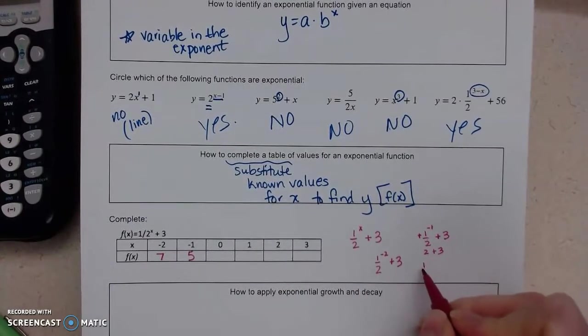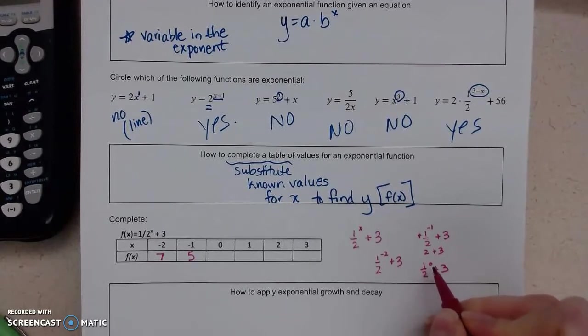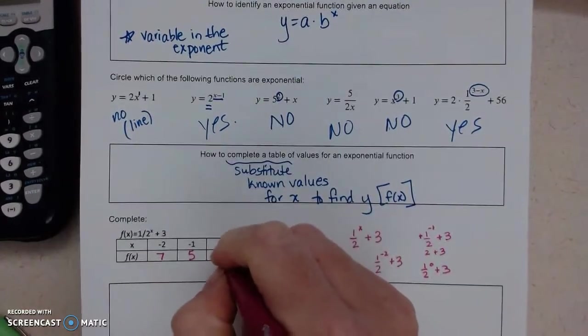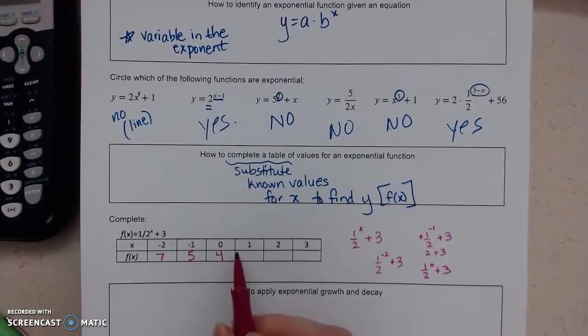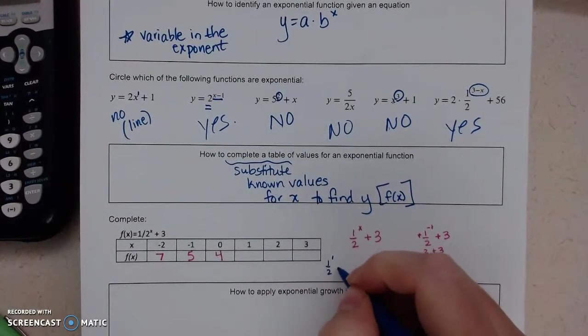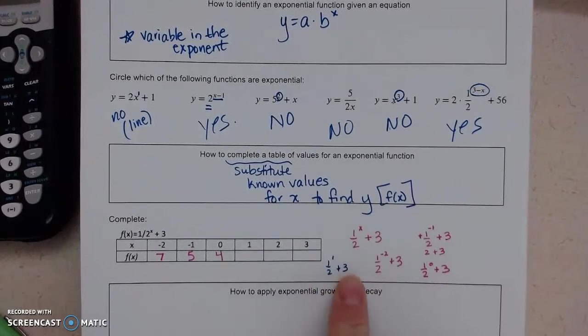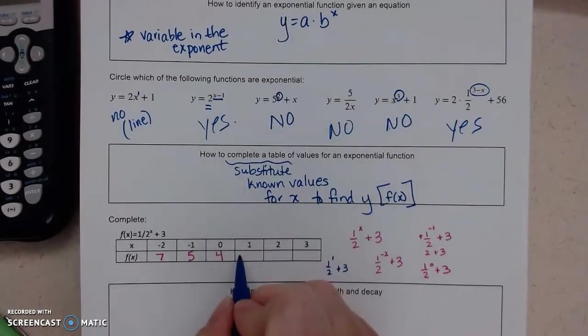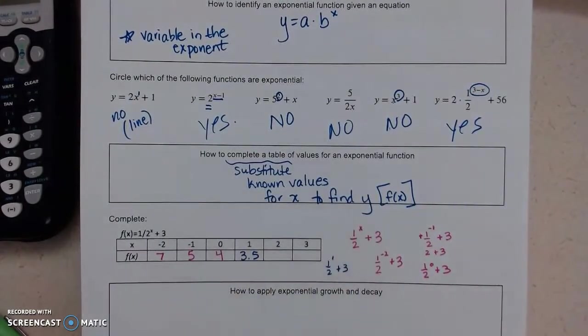0 is 1 half to the 0 plus 3. Anything to the 0 power is 1. So 1 plus 3 is 4. If x equals 1, I get 1 half to the 1 plus 3. 1 half plus 3 is 3 and a half, or you can write it as 3.5. Decimals are fine.